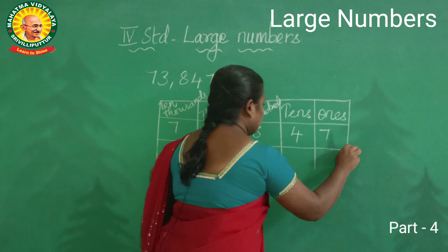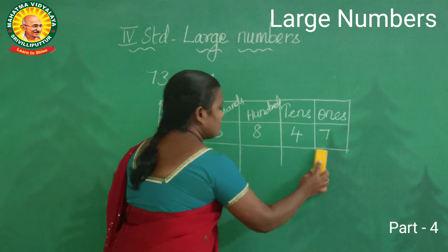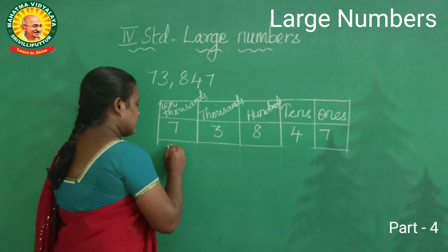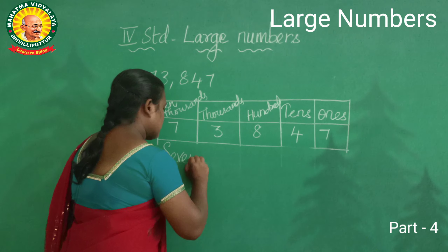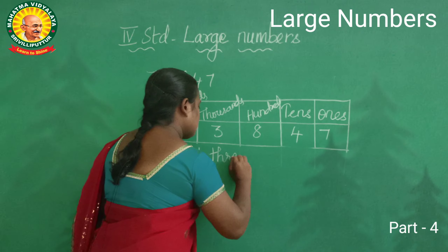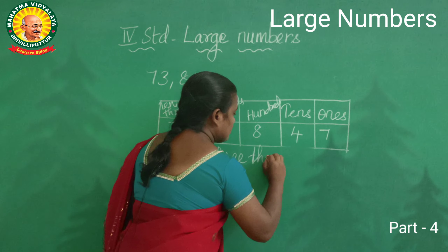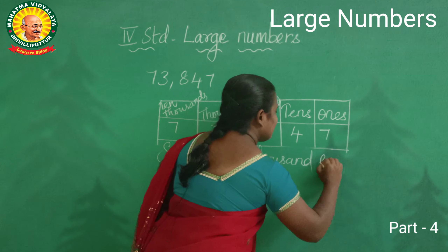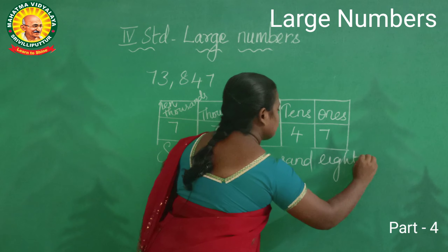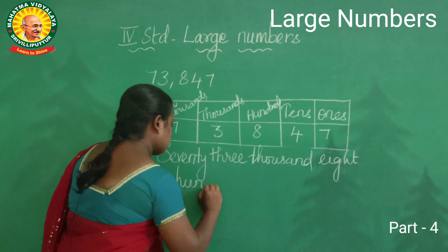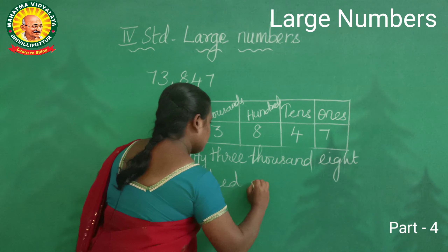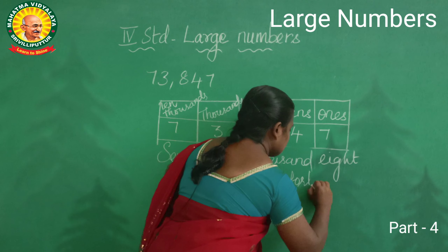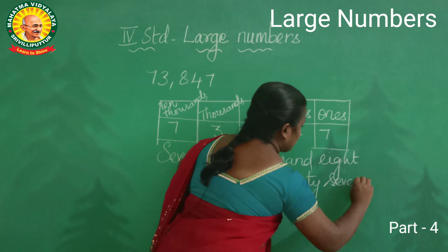Super. Now you have to write the number name. Say: 73,000... next — eight hundred... and forty-seven. Super. Number name: seventy-three thousand eight hundred and forty-seven.